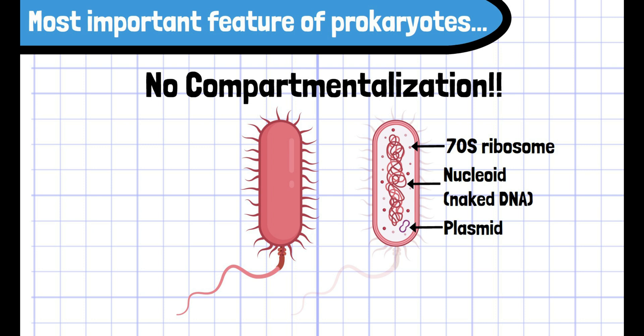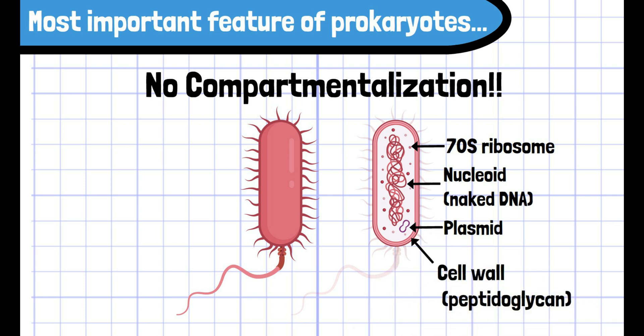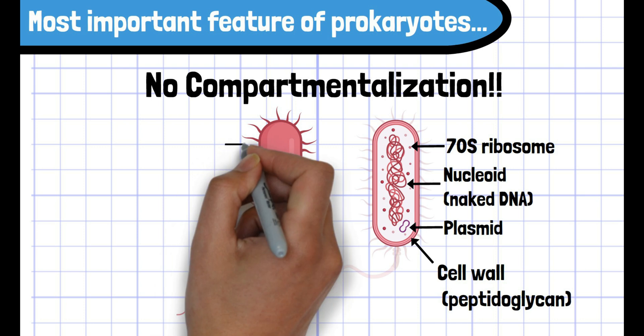On the other hand, there are some structures that eukaryotes don't have. In eukaryotes, a cell wall is only seen in plant cells, but in prokaryotes, most of them are surrounded by a cell wall. The component of prokaryotic cell wall is peptidoglycan, whereas the cell wall of plant cells is made of cellulose.